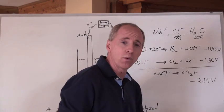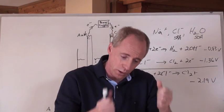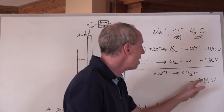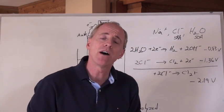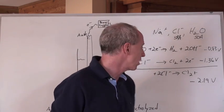So by the way, what does that mean? That's the minimum voltage, 2.19 volts, that must be exceeded to drive that reaction. So when I zap from that power supply, I've got to make sure that that power supply is going to provide more than 2.19 volts to make the reaction occur.